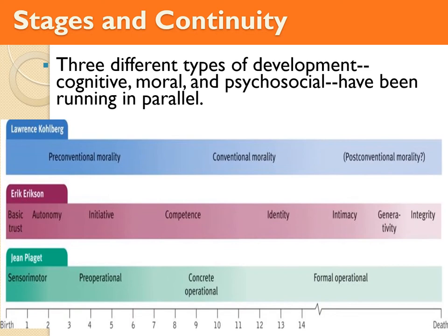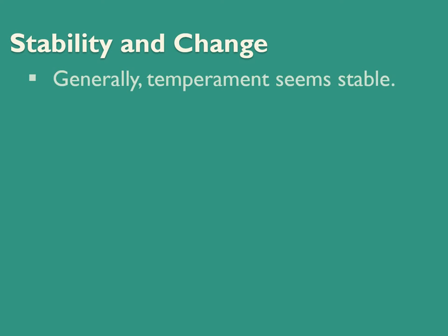We'll look at three major stage theorists: Kohlberg, Erikson, and Piaget — covering moral development, psychosocial development, and cognitive development respectively, and how they parallel each other over time.